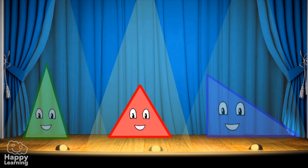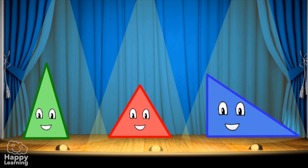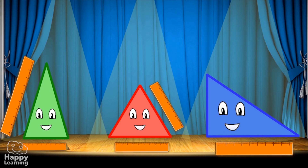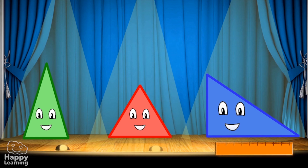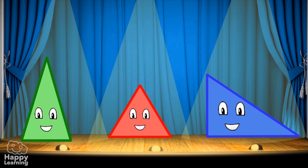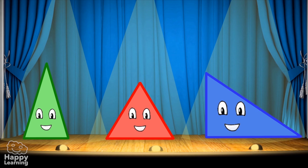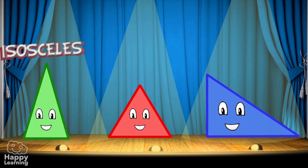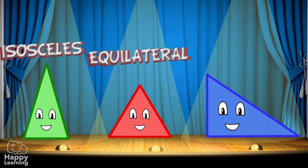But there are different kinds of triangles and we classify them by the length of their sides. Using this classification we get three types of triangles: isosceles, equilateral and scalene.